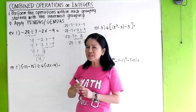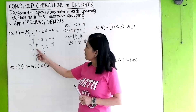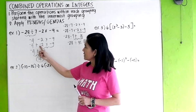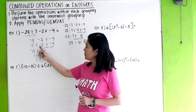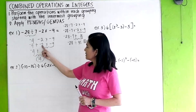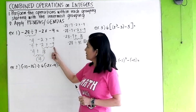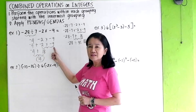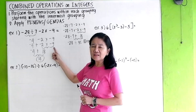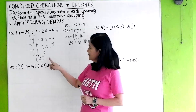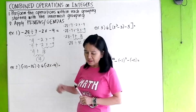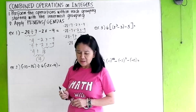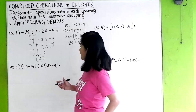You will see that if you add these two first — negative 4 plus negative 2 is negative 6, times negative 9 — it will give you 54. But the correct answer is positive 14.